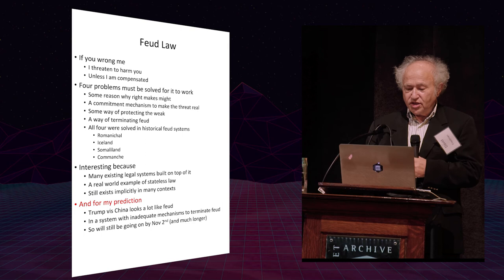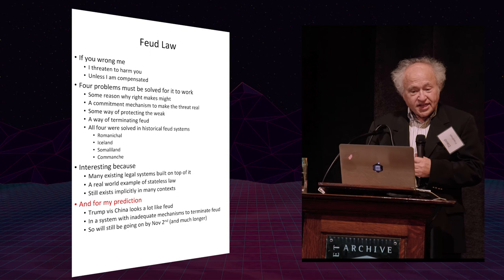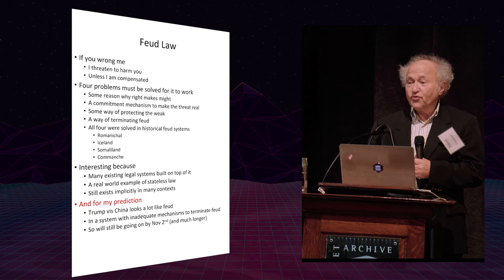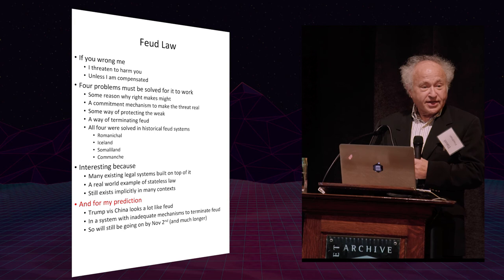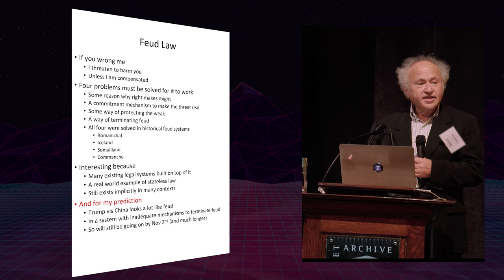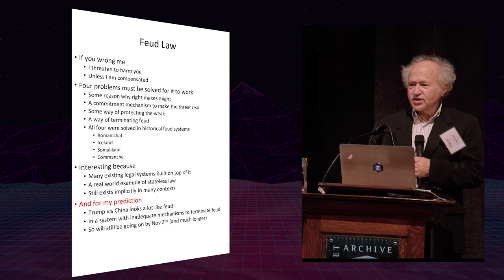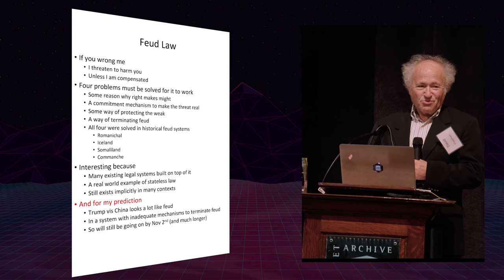Why is all of this interesting? It's interesting for a number of reasons. First, I think there is evidence that many existing legal systems were built on top of feud law. That's clearly true for Anglo-American common law. There is evidence of fossilized feud in Islamic and Jewish law, weaker evidence for Roman law, and so forth. Second, it is a real-world example of stateless law. When I wrote my first book back 40-some years ago, I described a hypothetical future society in which law and law enforcement were entirely private. I now know that I was reinventing the wheel. That that was a modern high division of labor version of what has existed in a variety of societies.